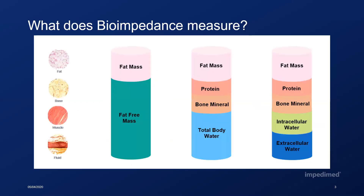But what does bioimpedance measure? Bioimpedance is able to measure an indication of the fluid in the body. This is because the body is about 60 to 65 percent water. Water is distributed through cells, interstitial and vascular compartments — for example blood and lymph — and conducts an electrical current because it contains dissolved ions such as potassium, sodium and chloride, which are able to move. The human body consists of various components such as fat, bone, muscle, organs, fluids, proteins and minerals.